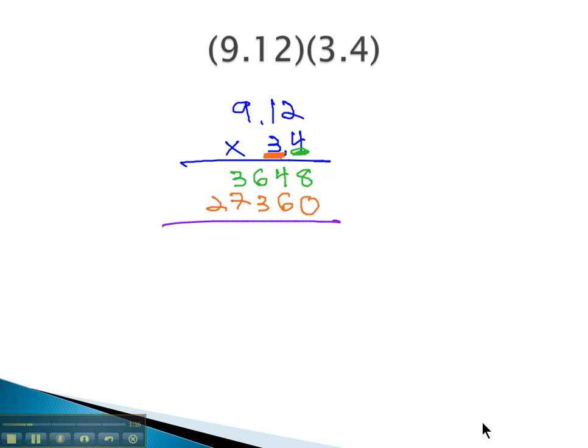We then can add these together. 8 and 0 is 8, 4 and 6 is 10, carry the 1. 6, 1 and 3 is 10, carry the 1. 3, 7 and 1 is 11, carry the 1. 2 and 1 is 3.